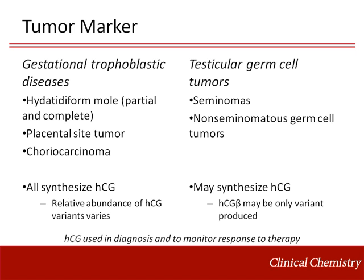HCG can also be produced by testicular germ cell tumors. Approximately 20% of seminomas and 65% of non-seminomatous germ cell tumors produce HCG. Some testicular cancers, particularly seminomas, may produce only the free beta subunit of HCG, and so to be useful as a tumor marker of testicular cancer, HCG immunoassays must be able to detect that variant.